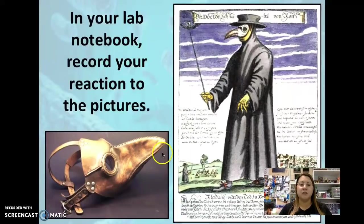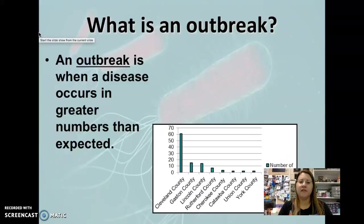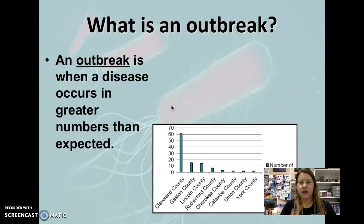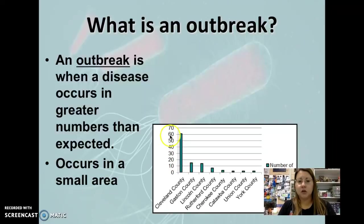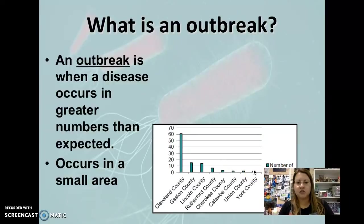So they would pack the bird beak part of the mask with things that smelled sweet, like spices and dried flowers, thinking it would protect them from harm caused by the plague. Looking at this graph, we can see different variations in the number of people affected by this type of outbreak. An outbreak is when a disease suddenly occurs in an area - usually a smaller area - in greater numbers than you would expect. Looking at this graph, about 60 people in Cleveland County had this particular infection, with surrounding counties like Gaston County and some in South Carolina having smaller numbers.